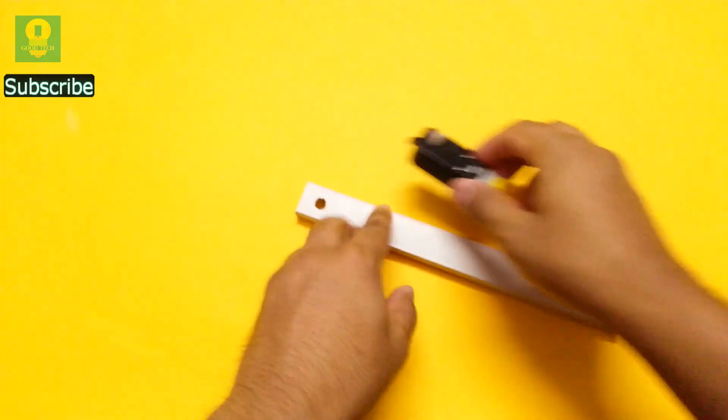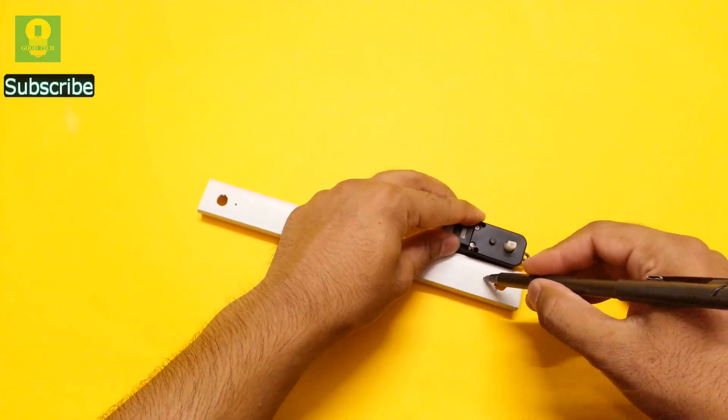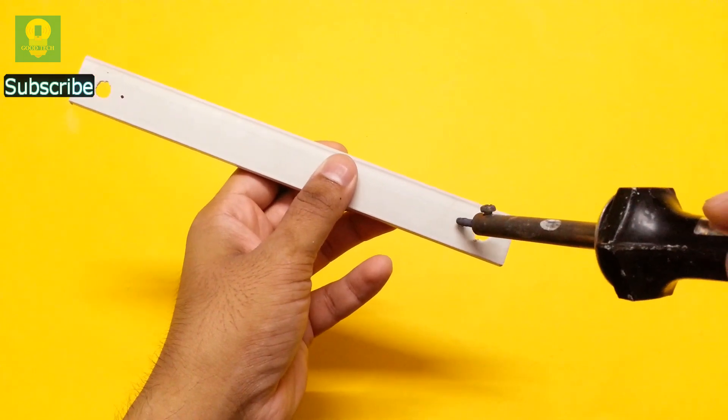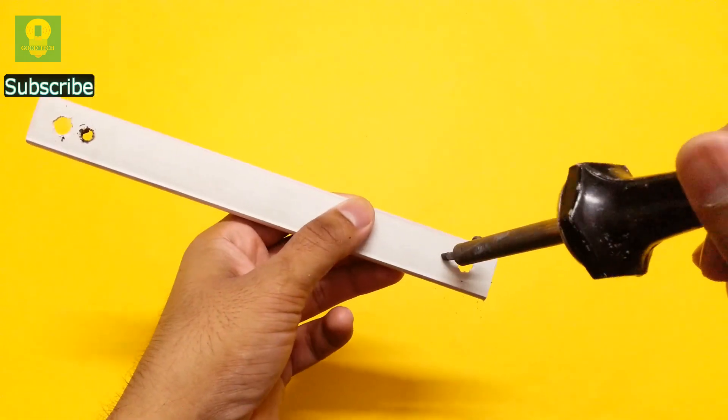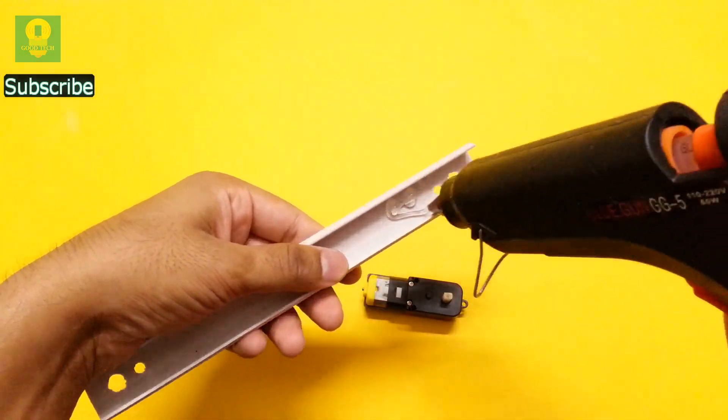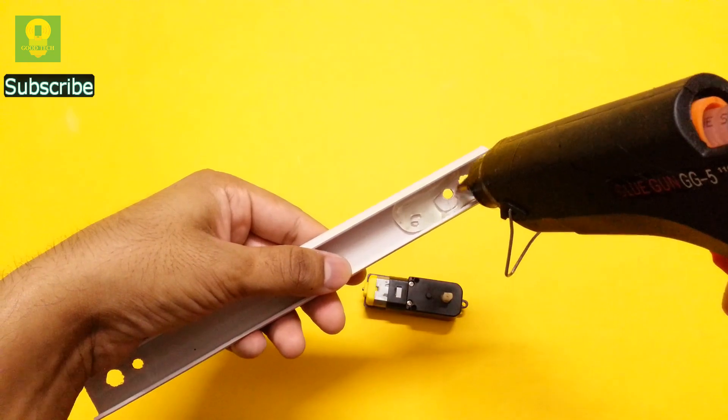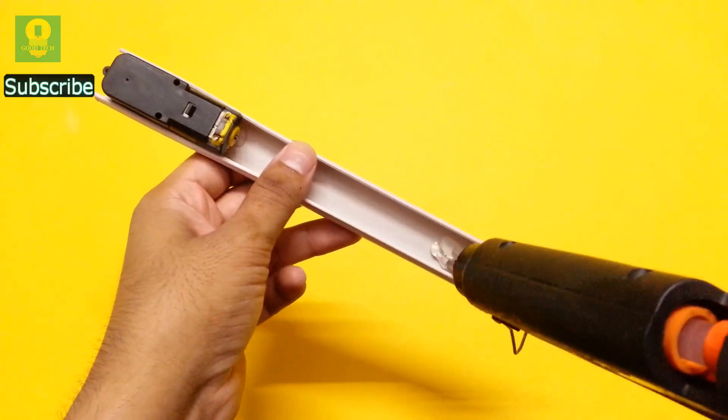Take a gear DC motor, align the motor shaft to the hole and mark the points as shown on both sides. Make holes at both the marked points. Apply hot glue and attach the motor to the electrical cable raceway. Repeat the process on the other side as well.